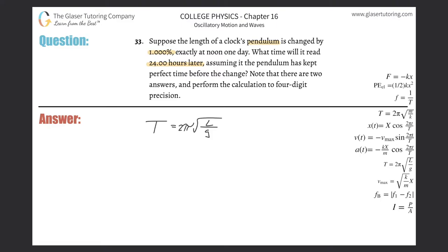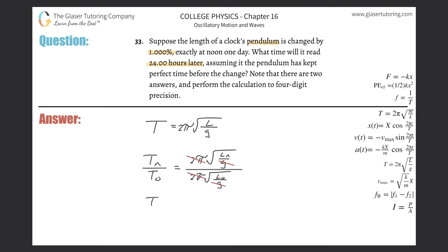I want to find the new period relative to the old period. That is going to be equal to 2π multiplied by the square root of the new length divided by g, divided by 2π times the square root of the old length divided by g. Notice how everything cancels — the pis and the g's. So basically, I'm left with the relationship that the new period divided by the old period equals the square root of the new length relative to the old length.